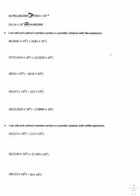For number sixteen, you are adding the decimals. The exponents are the same, so you are going to add 8.65 plus 0.81. You get 9.46 times 10 to the 7th power.